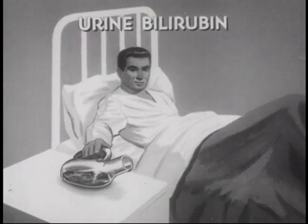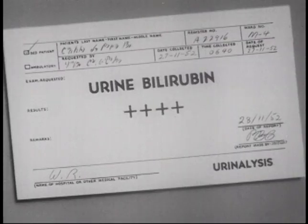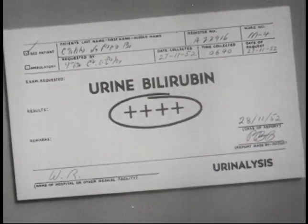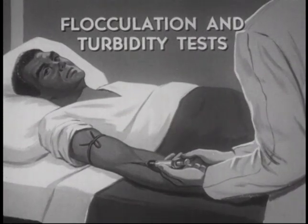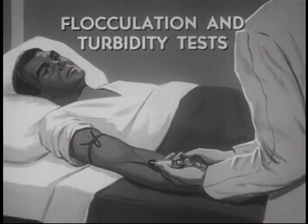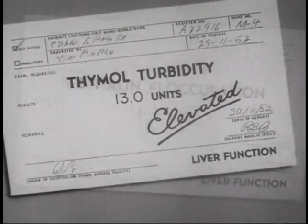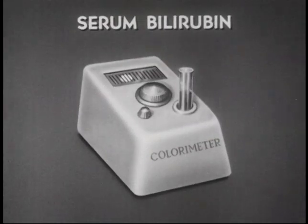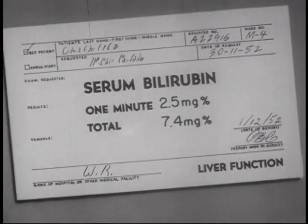Laboratory findings confirm the diagnosis. The test for bilirubin in the urine is easily performed and is frequently the first definite indication of hepatic abnormality. To confirm the diagnosis of hepatitis, the thymol turbidity and cephalin cholesterol flocculation tests are essential. Serum bilirubin determinations may be used to follow the progression and regression of jaundice.